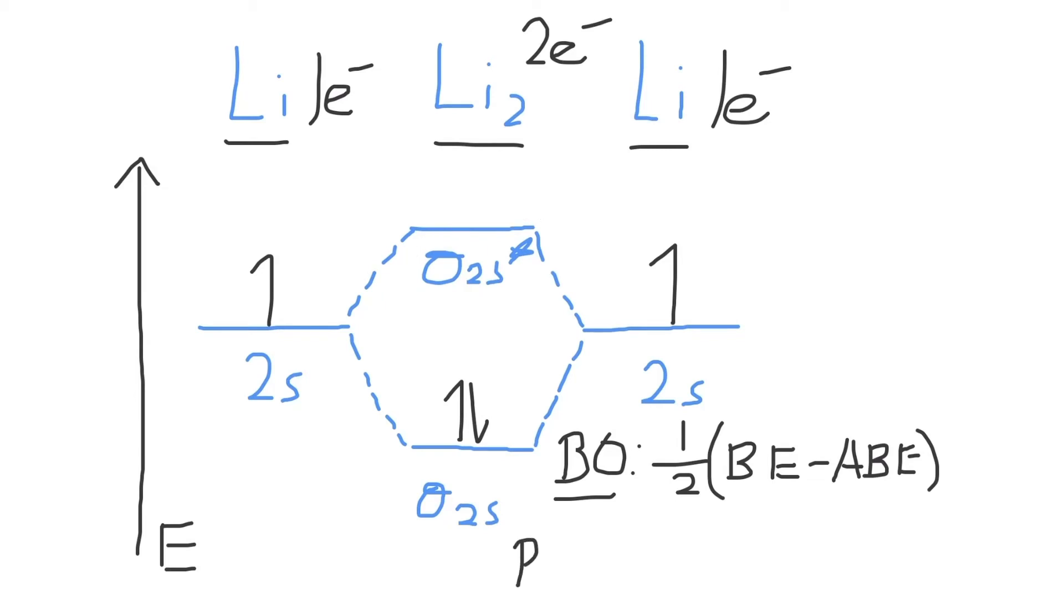So, for Li2, bond order will equal one-half times the number of bonding electrons, of which there's two, minus the number of antibonding electrons, of which there's none. One-half times two is equal to one, meaning the bond order of Li2 is equal to one.